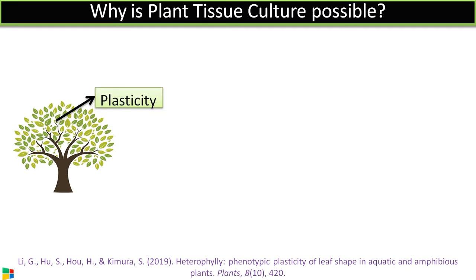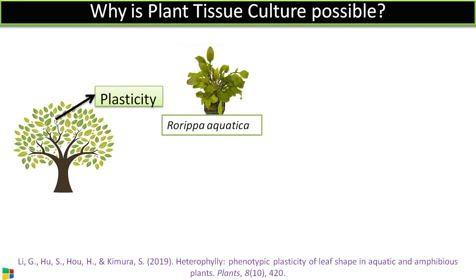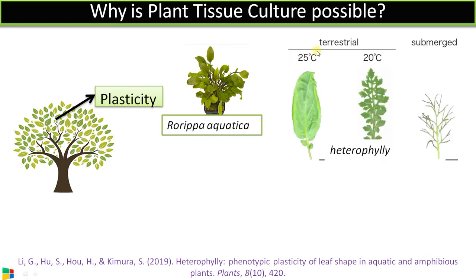The first quality is called plasticity. Plasticity refers to the ability of a plant to modify its growth and development in accordance with changes in the environment. To understand this concept, consider the plant Rorippa aquatica, which is an amphibious plant. At 25 degrees Celsius — the ambient condition for this plant — its leaves appear in a characteristic form.